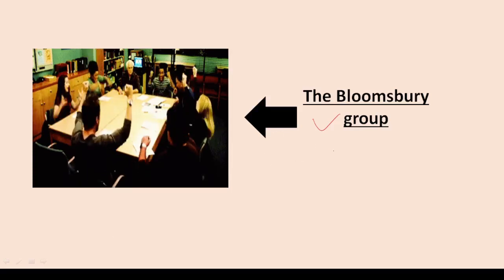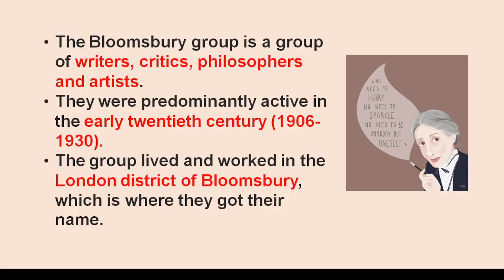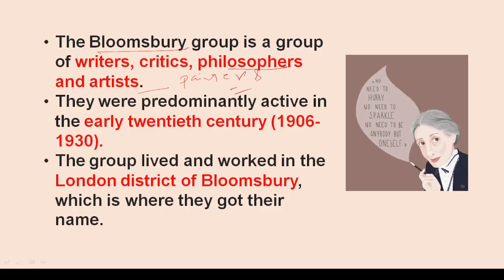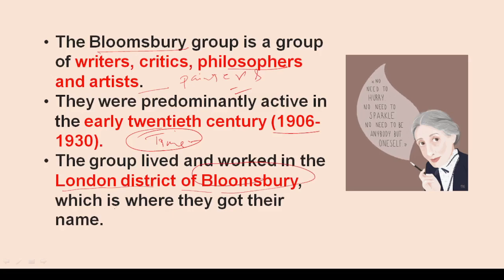Welcome to Best Knows Tutorial. Today we are going to talk about the Bloomsbury Group. The Bloomsbury Group is a group of writers, critics, philosophers, and artists. There were even some painters in this group. They were predominantly active in the early 20th century — the time period being roughly 1906 to 1930. The group lived and worked in the London district of Bloomsbury, which is where they got their name.